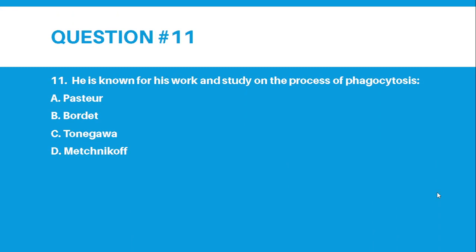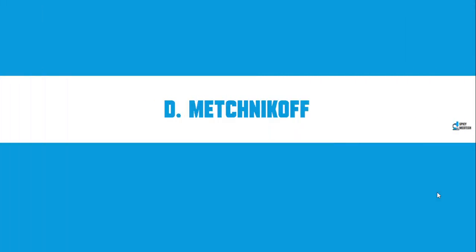Number 11. He is known for his work and study on the process of phagocytosis. Letter A, Pasteur. Letter B, Bourdais. Letter C, Tonegawa. Letter D, Mechnikoff. And the correct answer for number 11 is letter D, Mechnikoff.